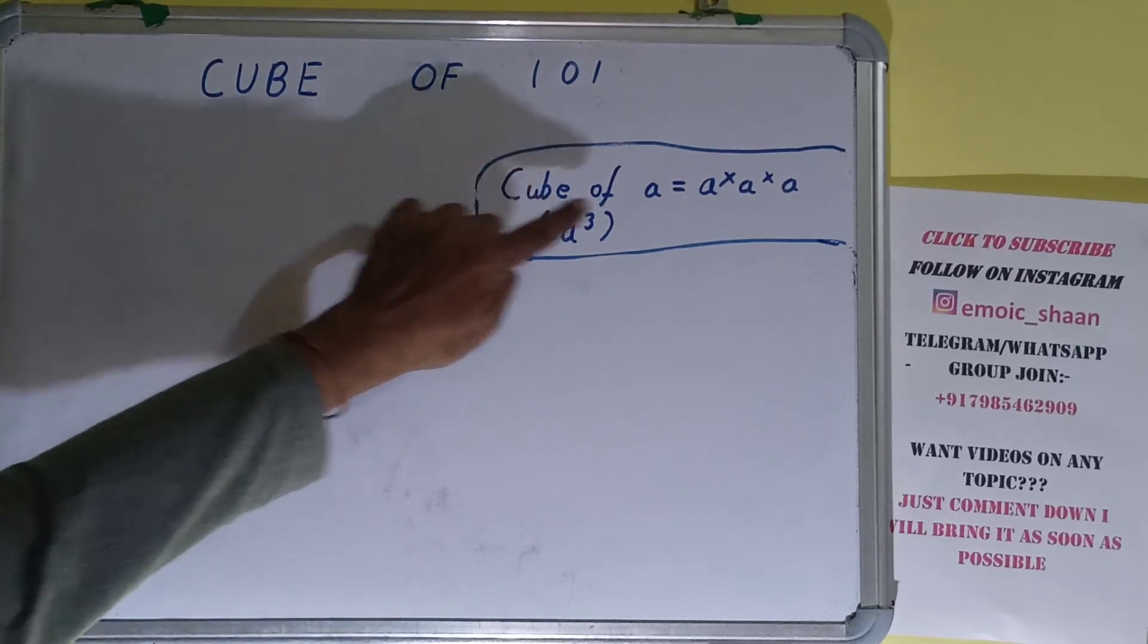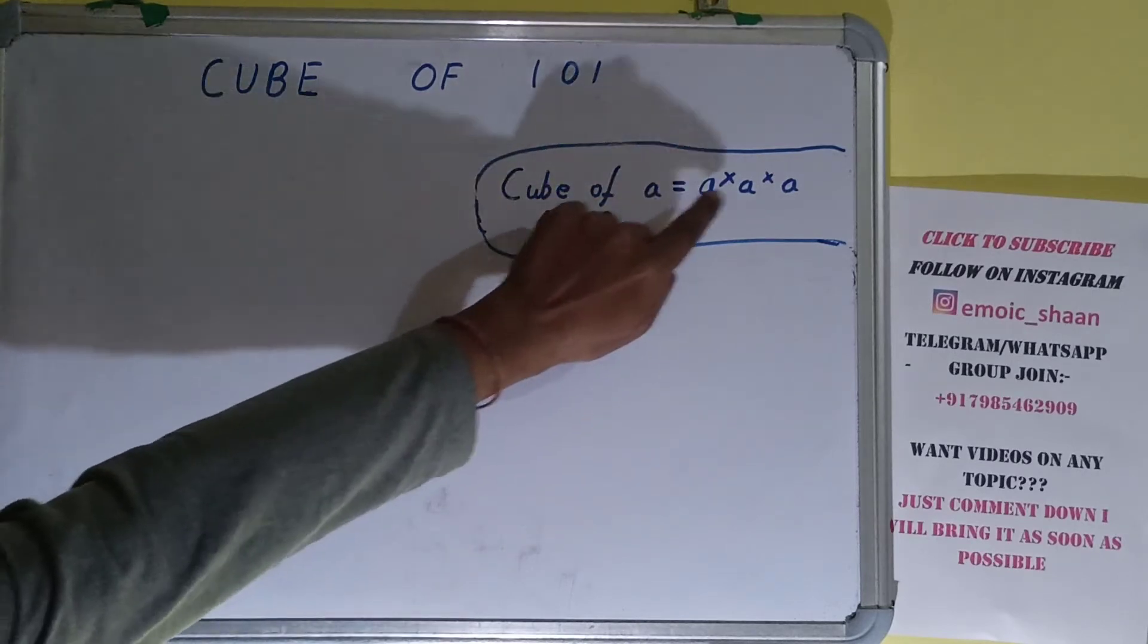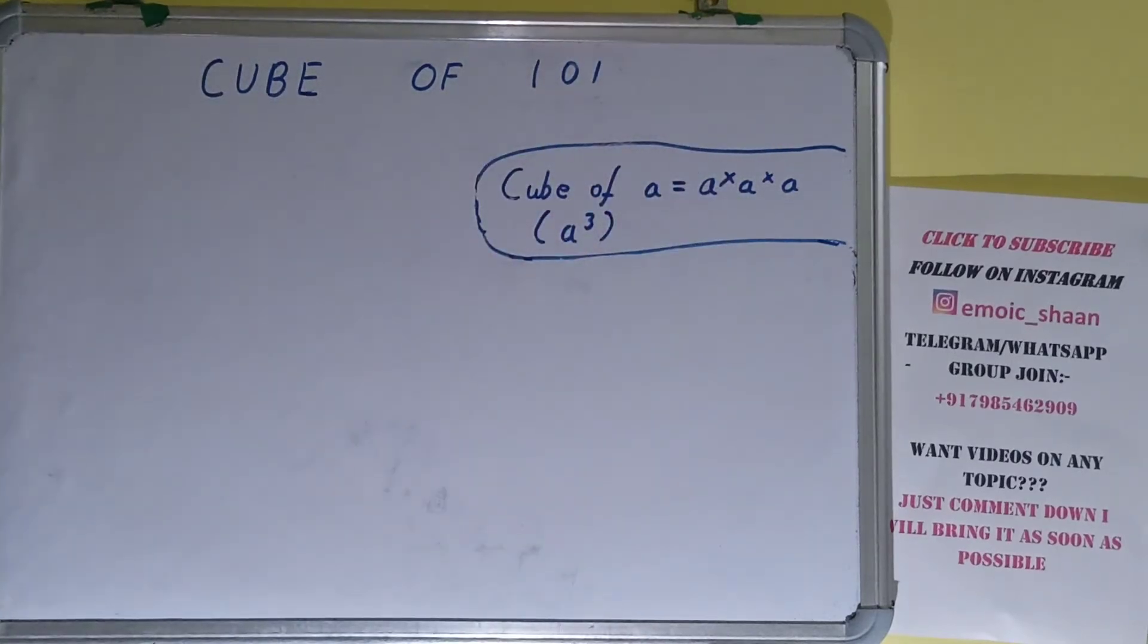Let's say we have to find cube of a, where a is any integer. Then we need to do a into a into a, that is how we can get cube of a. One more thing, cube of a can also be written as a³. So that was the general formula.